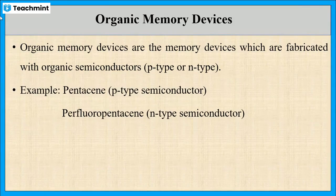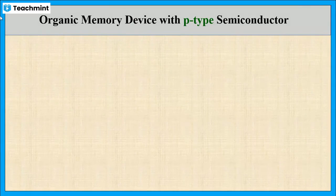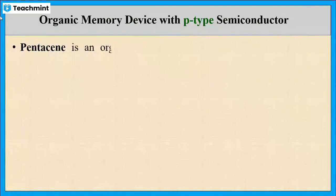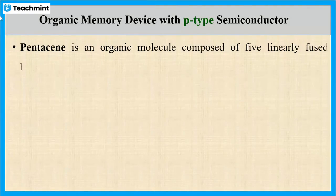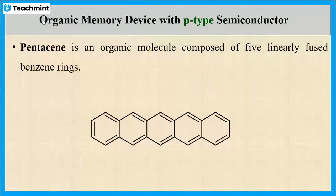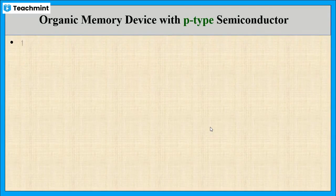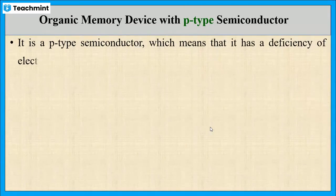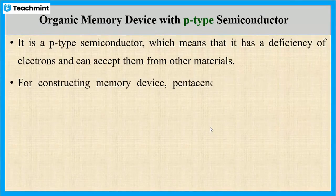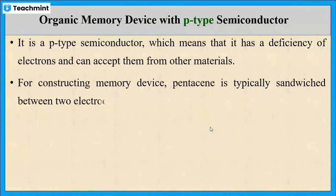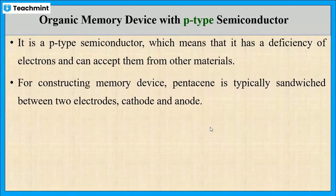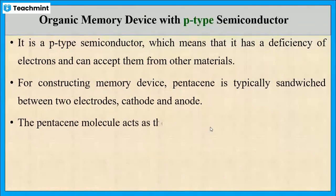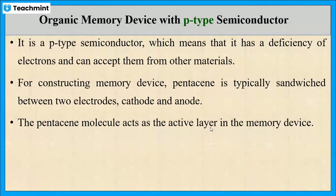Now let us discuss about P-type semiconductors used in organic memory devices. Pentacene is an example of a P-type semiconductor. It contains 5 benzene rings which are linearly connected. It is a P-type semiconductor. In order to construct a memory device, pentacene is sandwiched between two electrodes — cathode and anode. This pentacene molecule acts as the active layer in the memory device.